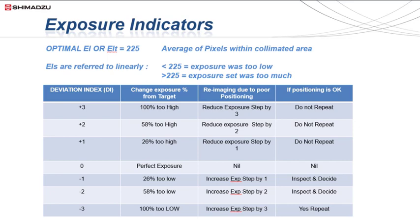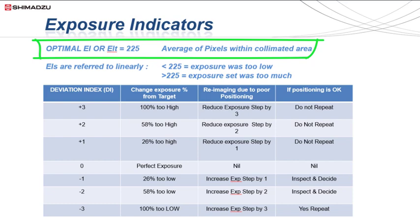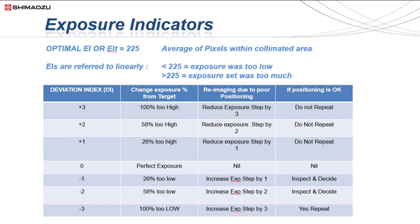In the latest Canon flat panel detectors from the X10 range, the optimal EI for most body parts is approximately 225. Chest x-ray EIs using a grid are generally between 100 to 150. There are several different methods of defining whether to increase or decrease exposure using EI or DI values.